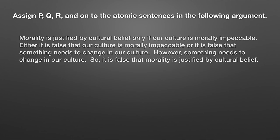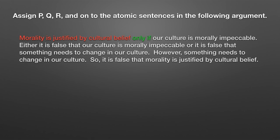So what does this look like? Take a look at this sentence: 'Morality is justified by cultural belief only if our culture is morally impeccable.' The first thing you need to do is identify the atomic propositions. 'Morality is justified by cultural belief' is the first atomic proposition. The phrase 'only if' is our logical connective, and 'only if' gives us a conditional. What follows 'only if' indicates the consequent; what occurs before indicates the antecedent. This leads us to our second atomic proposition: 'our culture is morally impeccable.'